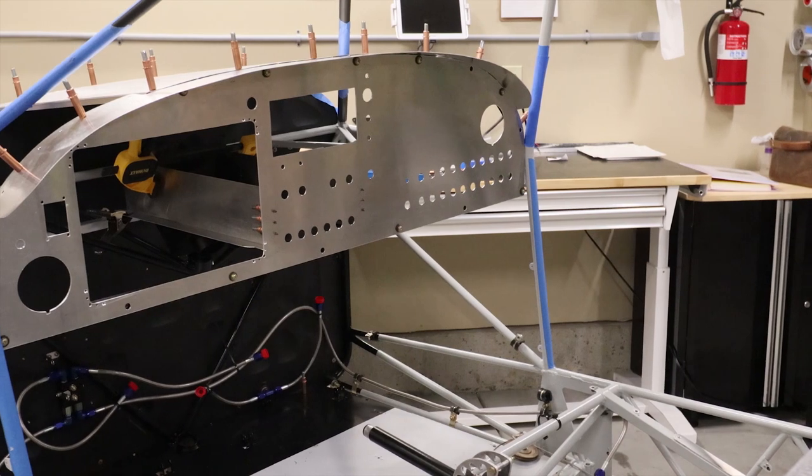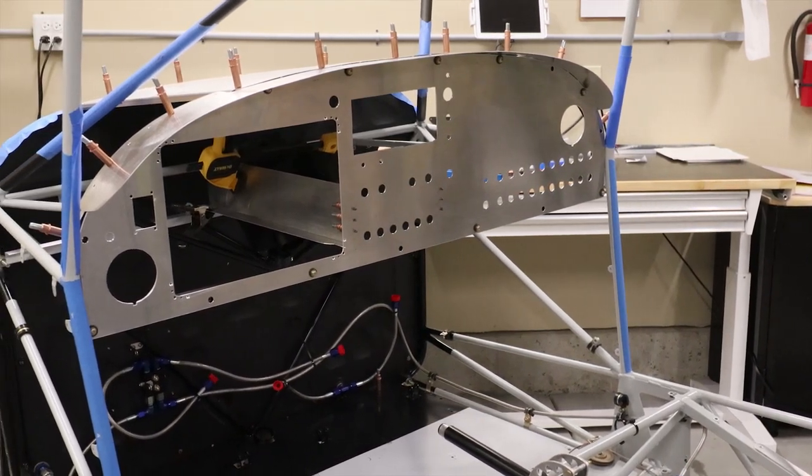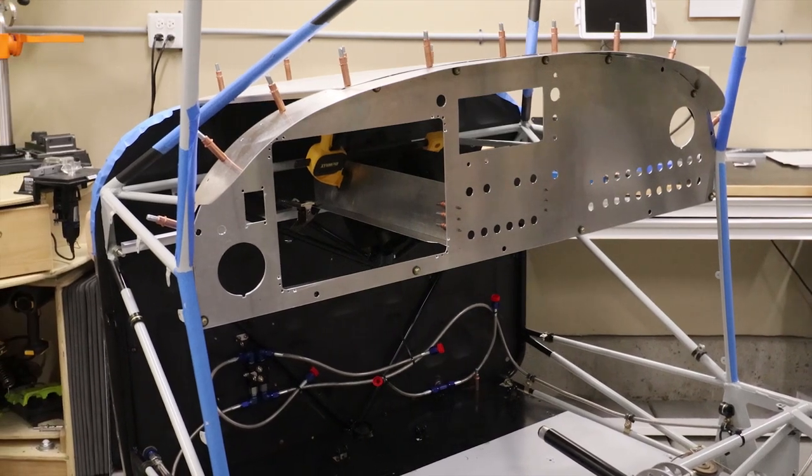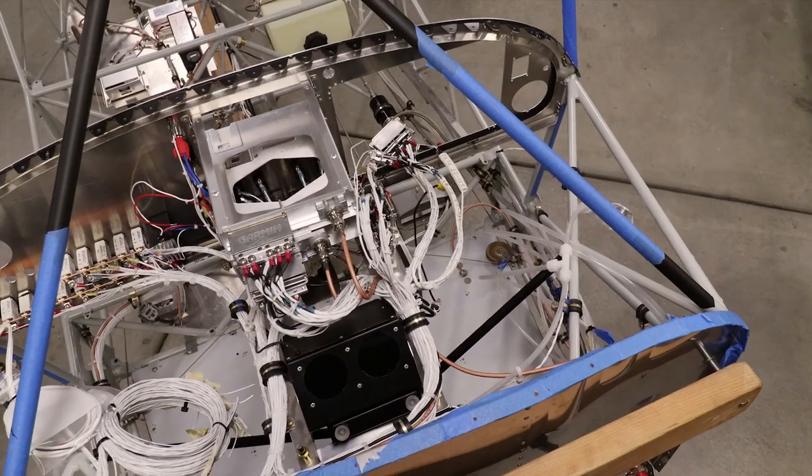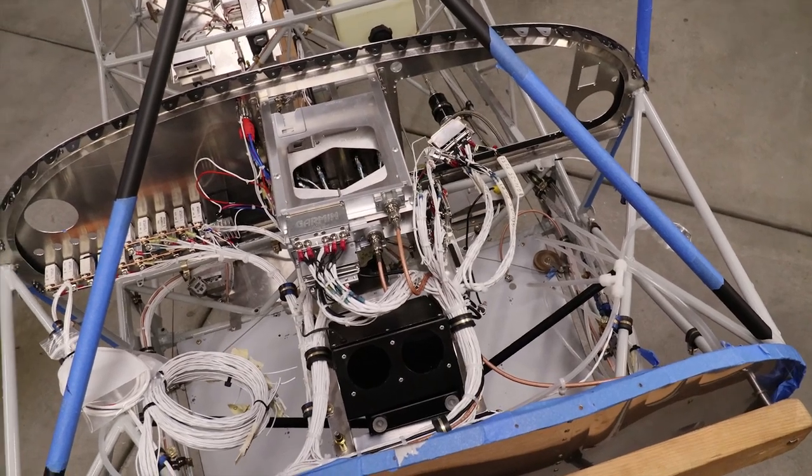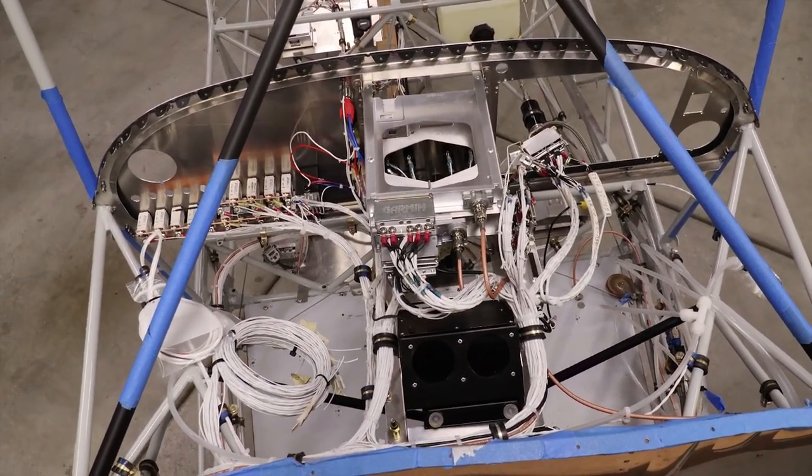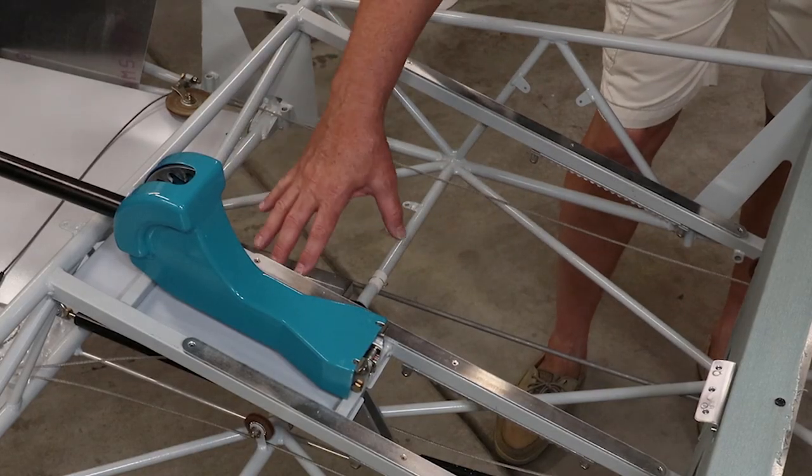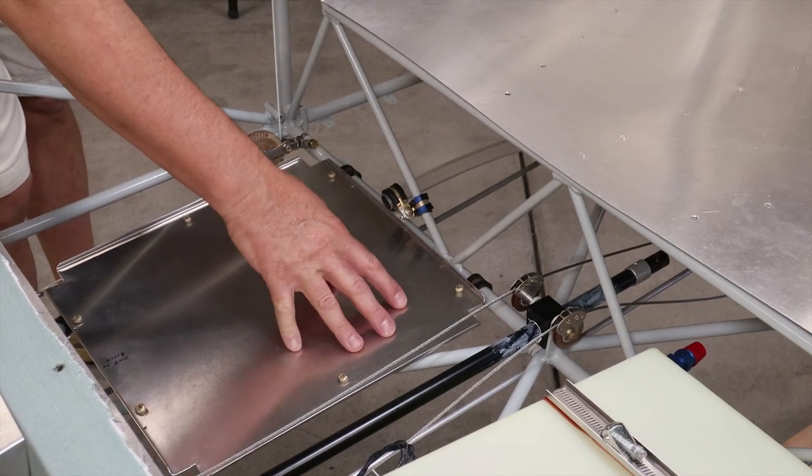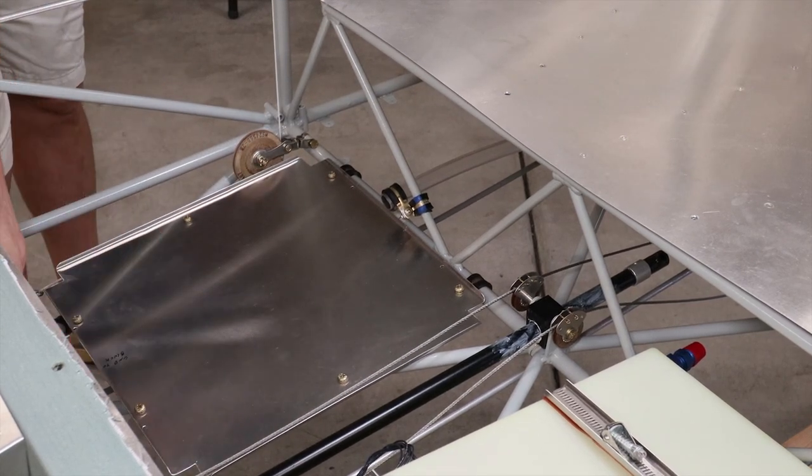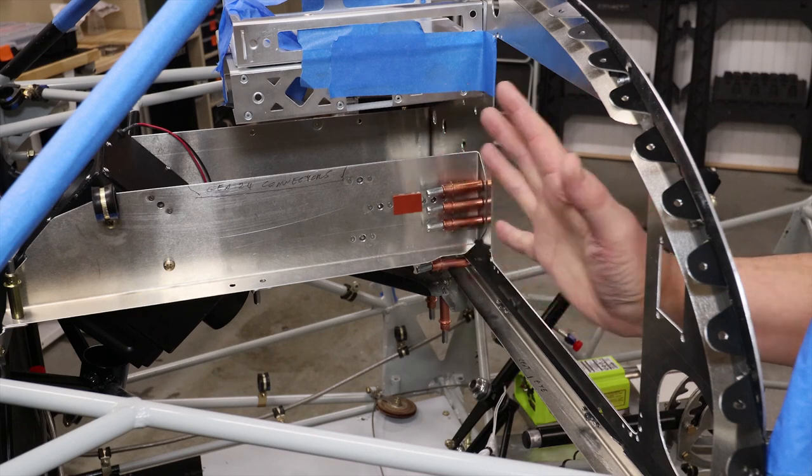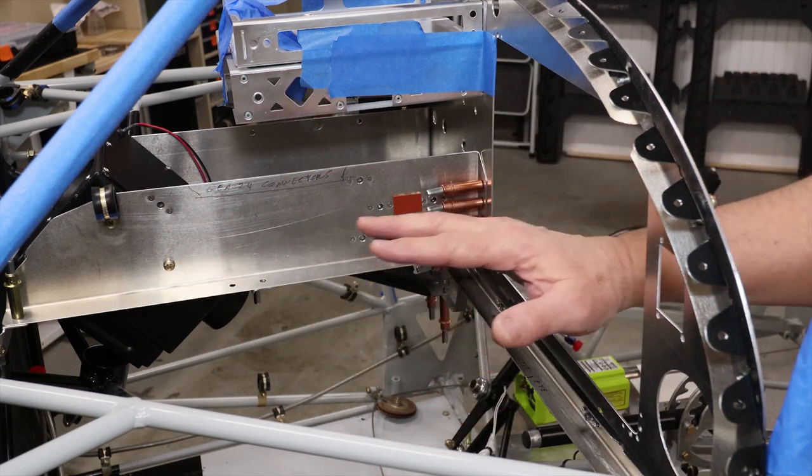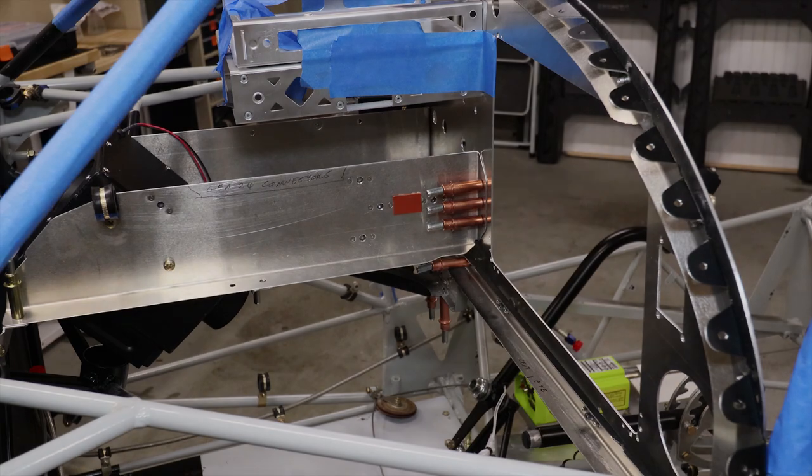Then once all the holes and cutouts are done, it's time to click the panel in place and find locations for all the boxes, or as we call them LRUs - line replaceable units. It was a bit of a jigsaw puzzle as usual, but I have plenty of options in three locations: behind the instrument panel, under the co-pilot seat, and under the baggage floor, always keeping in mind how I'm going to remove and replace an LRU when the airplane is in service. Since the G3X primary flight display is removed from the front, I'll have all this area to work with, making it easy to service components mounted behind the panel.